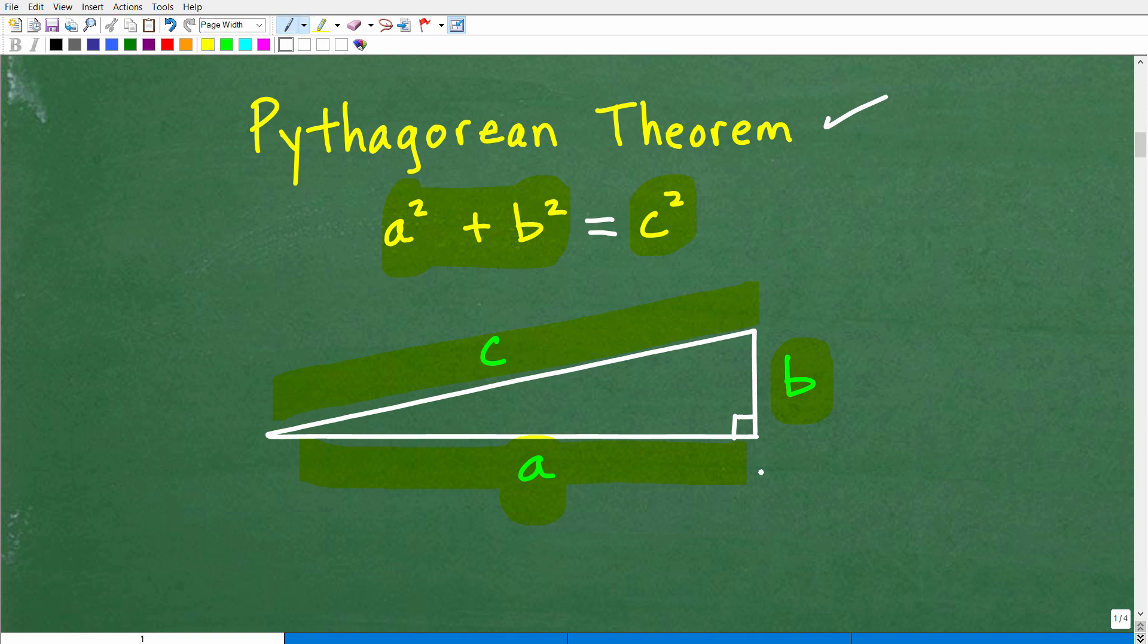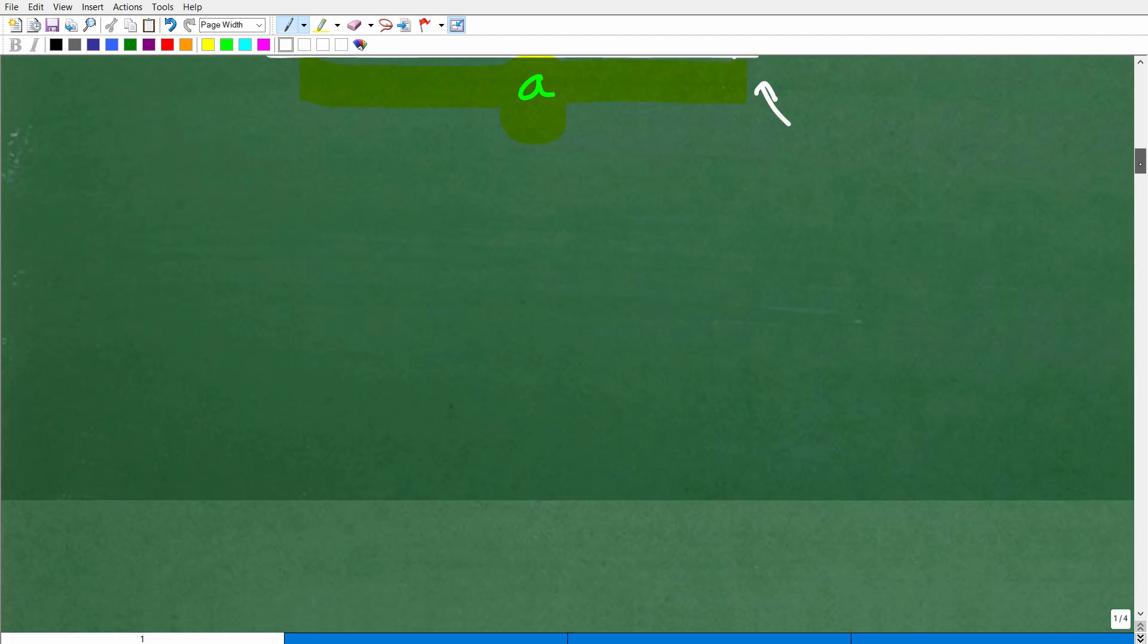So if we have a right triangle and we know the Pythagorean theorem, we can find the length of any of these sides. Of course you're going to have to know some basic algebra, but that's not that difficult. So let's go ahead and apply the Pythagorean theorem right now to solve this problem.